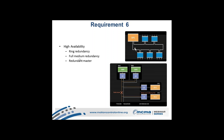Another form of high availability is full medium redundancy, where two concurrent networks run together. Each component is connected to both networks simultaneously through a link selector. The link selector automatically switches to the second network if one goes down, allowing all link selectors to switch automatically and the system to continue running.